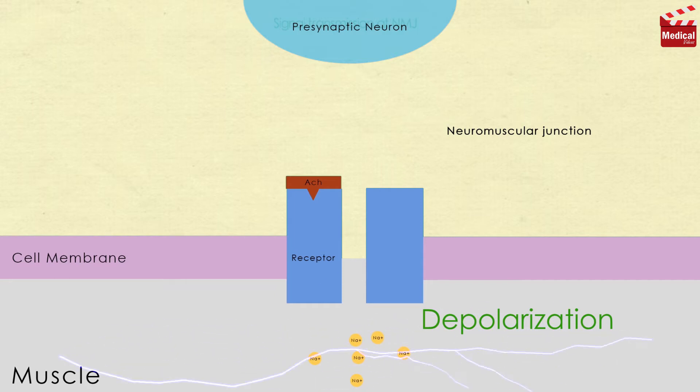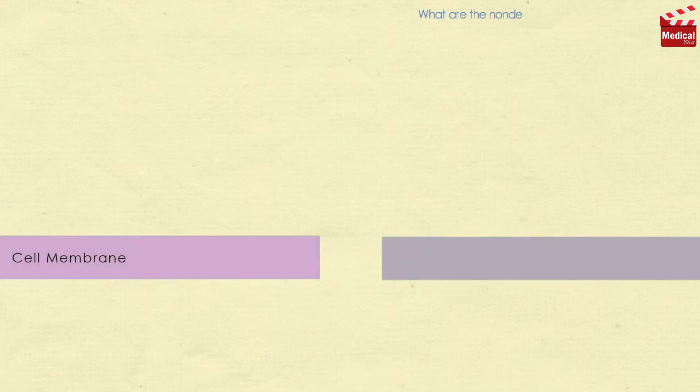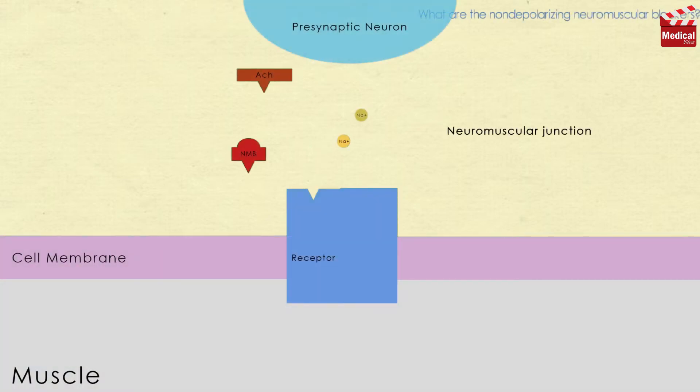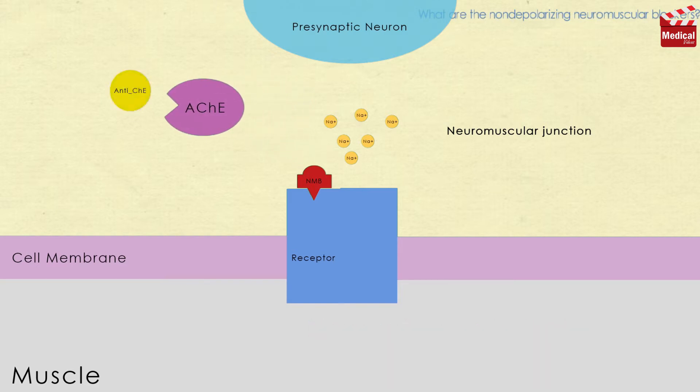So what are the non-polarizing neuromuscular blockers? They are just antagonists at these receptors. At low doses, these agents compete with acetylcholine at the nicotinic receptors and block them, leading to prevention of depolarization of the muscle cell membrane and inhibition of muscular contraction.